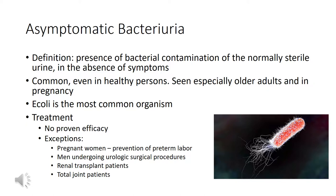Now let's move on to discuss asymptomatic bacteriuria. Asymptomatic bacteriuria is the presence of bacteria — bacterial contamination of the normally sterile urine — in the absence of symptoms. These patients will have abnormal urinalyses and urine cultures, but they won't have any symptoms whatsoever. It's common even in healthy people, but it's commonly seen in older adults and also in the pregnant population.